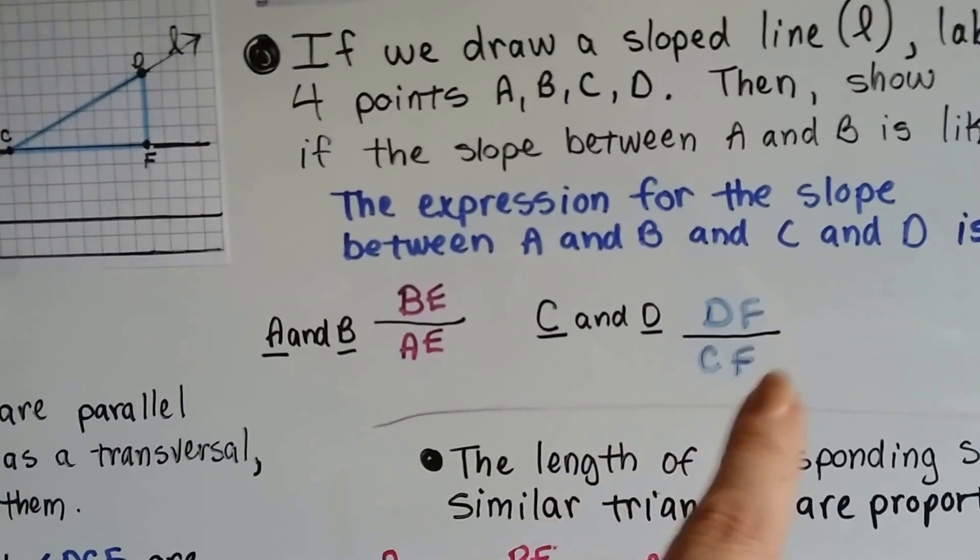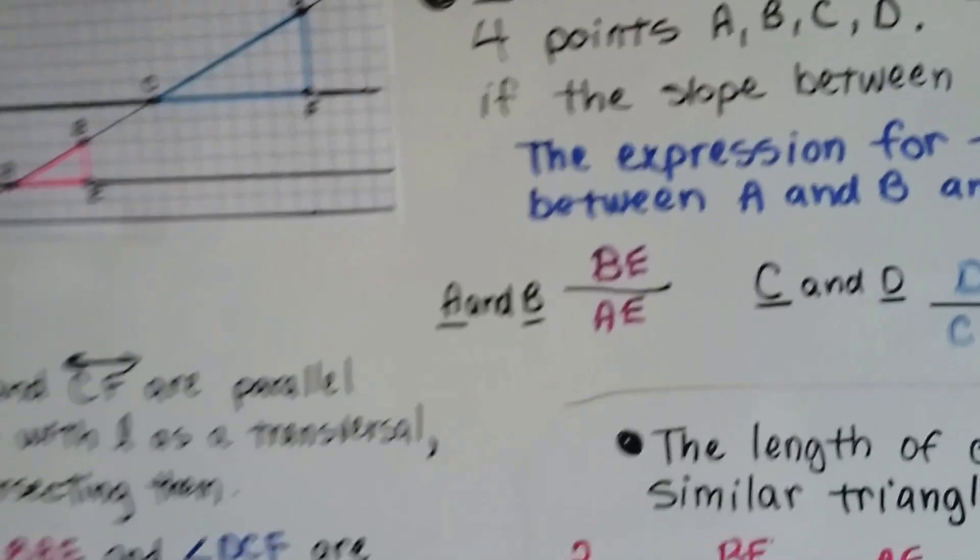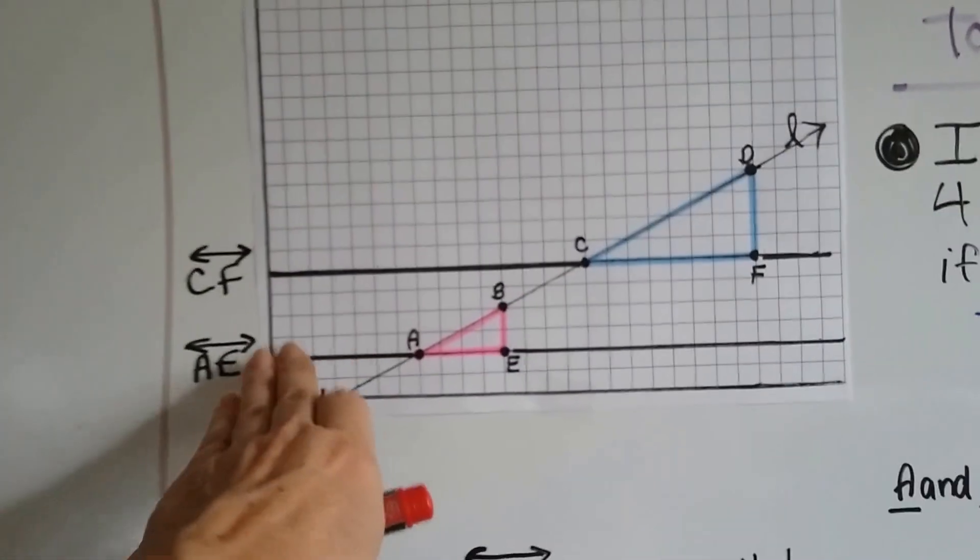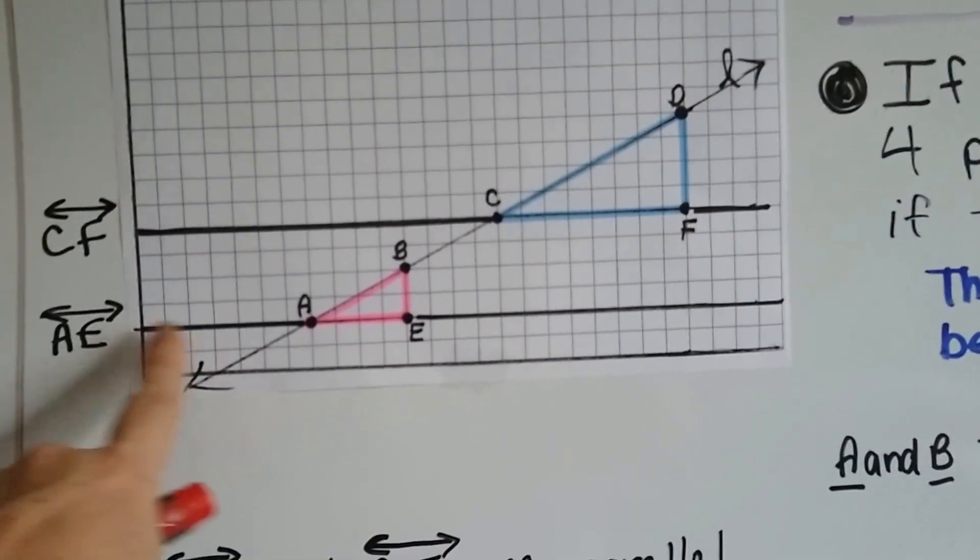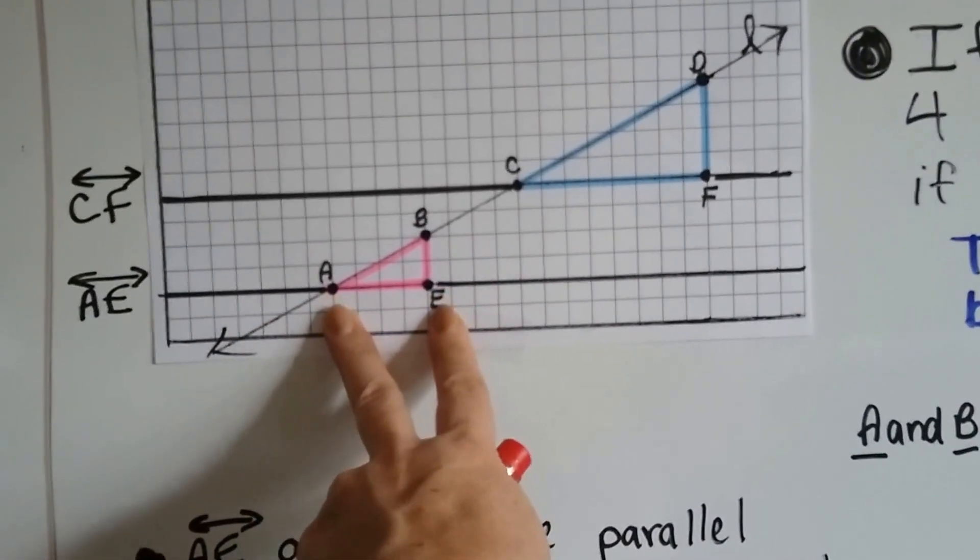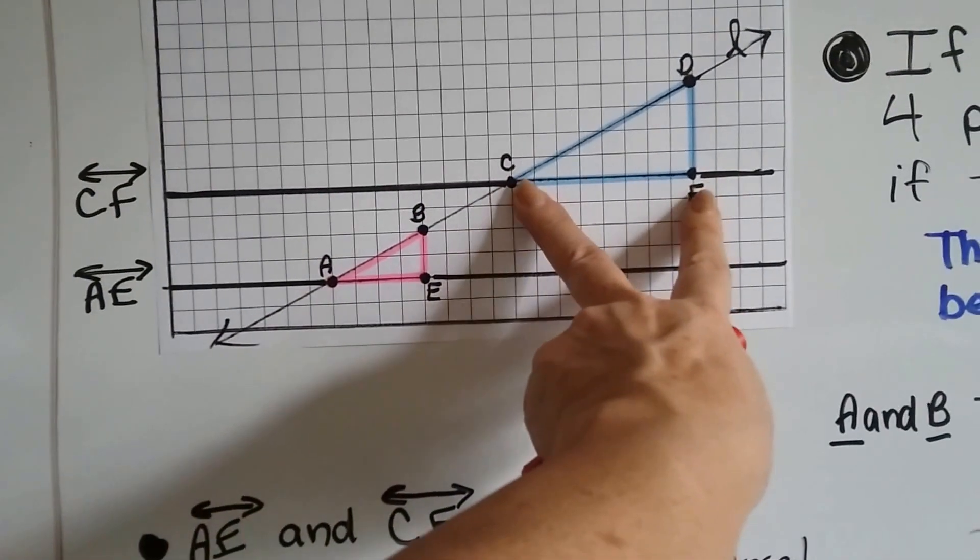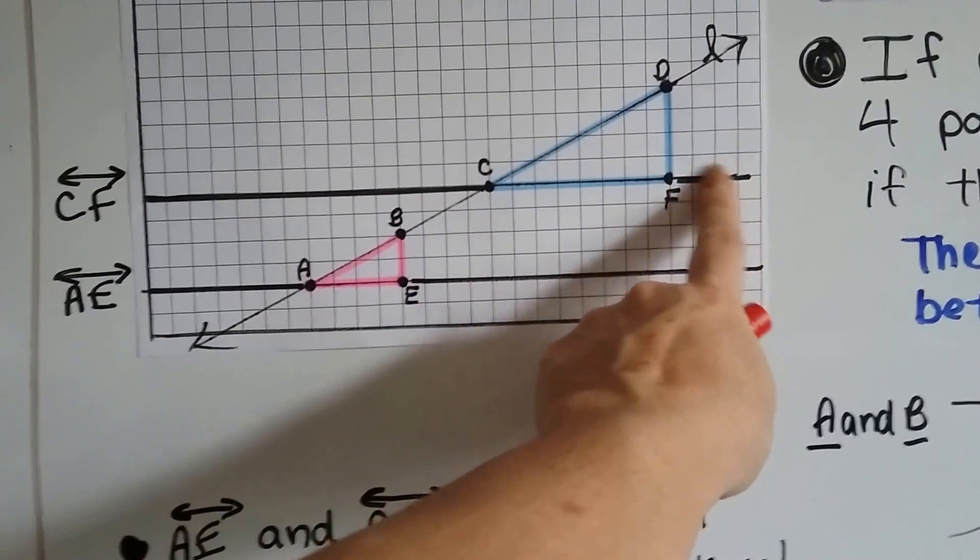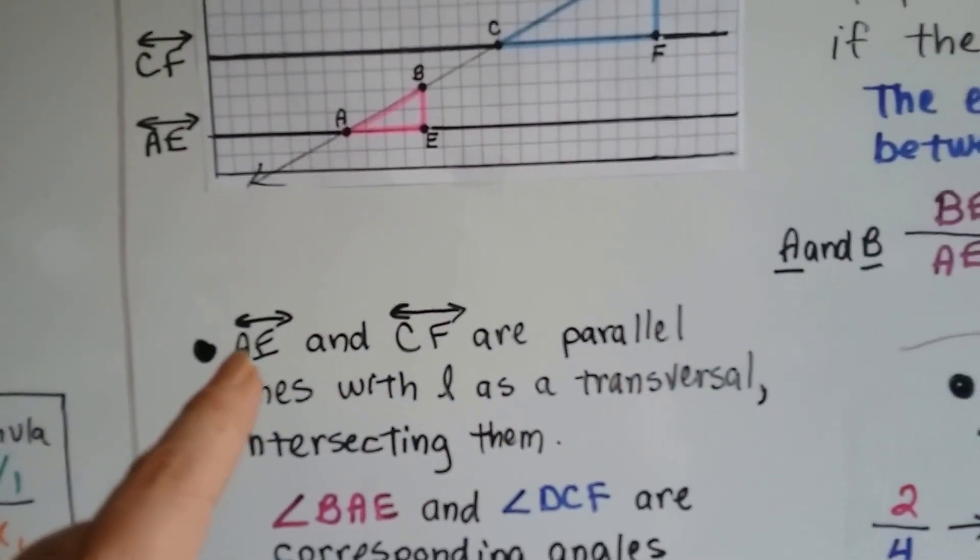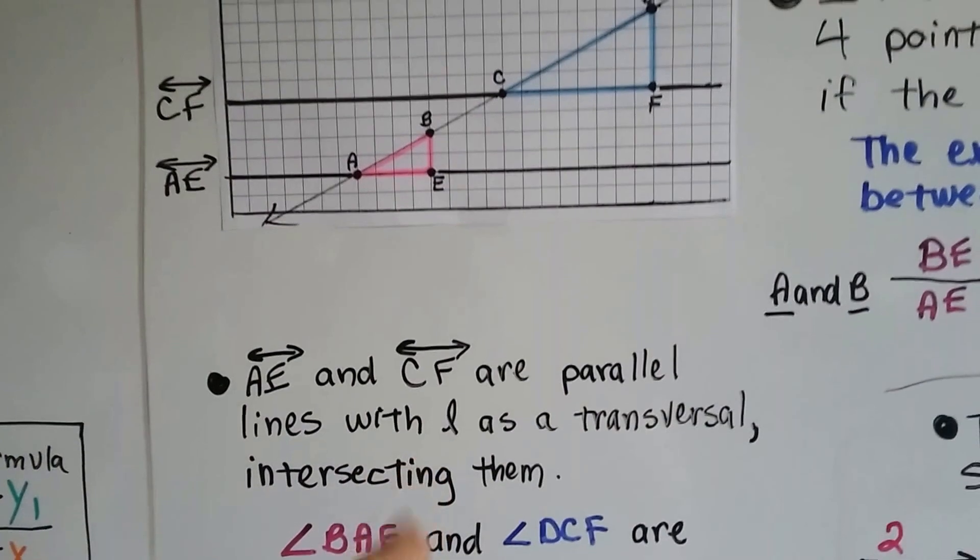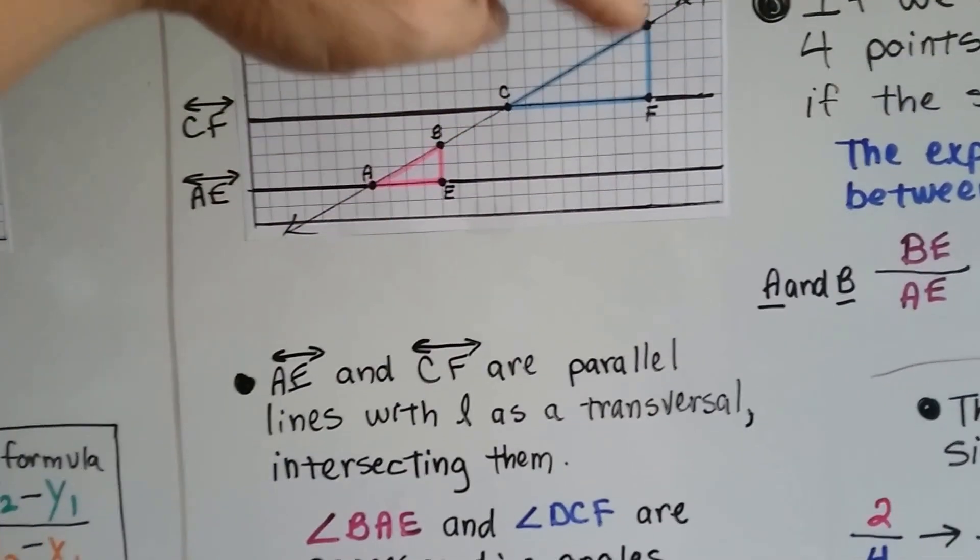Now, we've got a set of parallel lines here that I darkened. I wanted to make it easy for you to see. So because points A and E are on this line, this can be named line AE. And because C and F are on this line, they're points on this line, we can call this line CF. And they make parallel lines. So line AE and line CF are parallel lines with L as a transversal. These are interior angles, these are exterior angles.